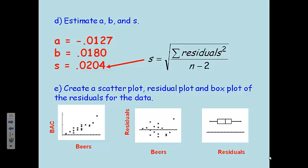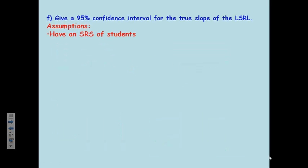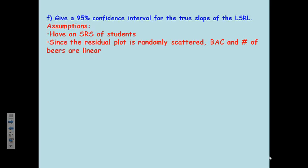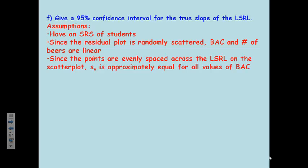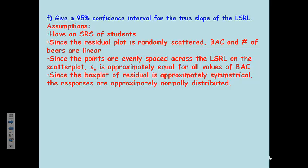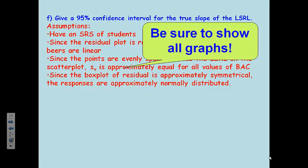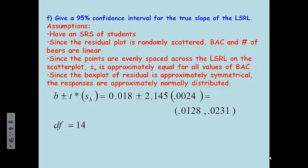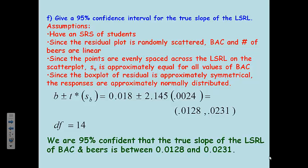So now that we've done all of this work, we've done all this stuff in our calculator, we figured out A, B, and S, we drew these three graphs, we're finally ready to do a 95% confidence interval. So first our assumptions. Remember we have to do LINER. Simple random sample, that takes care of the randomness. The residual plot is randomly scattered, that takes care of the linearity. They're evenly spaced, that means S sub Y is approximately equal, that takes care of the E part. The box plot is approximately symmetrical, that takes care of the normality. And then we also know that you're independent because it told us that earlier. You want to make sure you show all the different graphs. Using our formula, calculate our T star value based off a degree of freedom of 14. Throw in the two numbers the calculator gave us and you can come up with your confidence interval. And then finally, we can draw our conclusion. We're 95% confident that the true slope of the least squares regression line of blood alcohol content in beers is between 0.0128 and 0.0231.